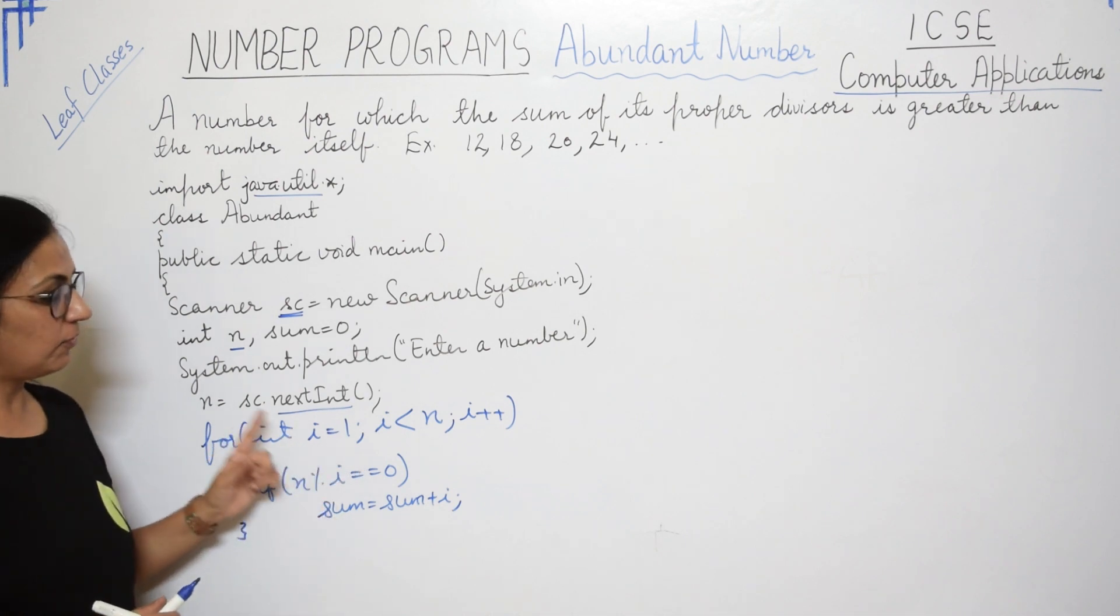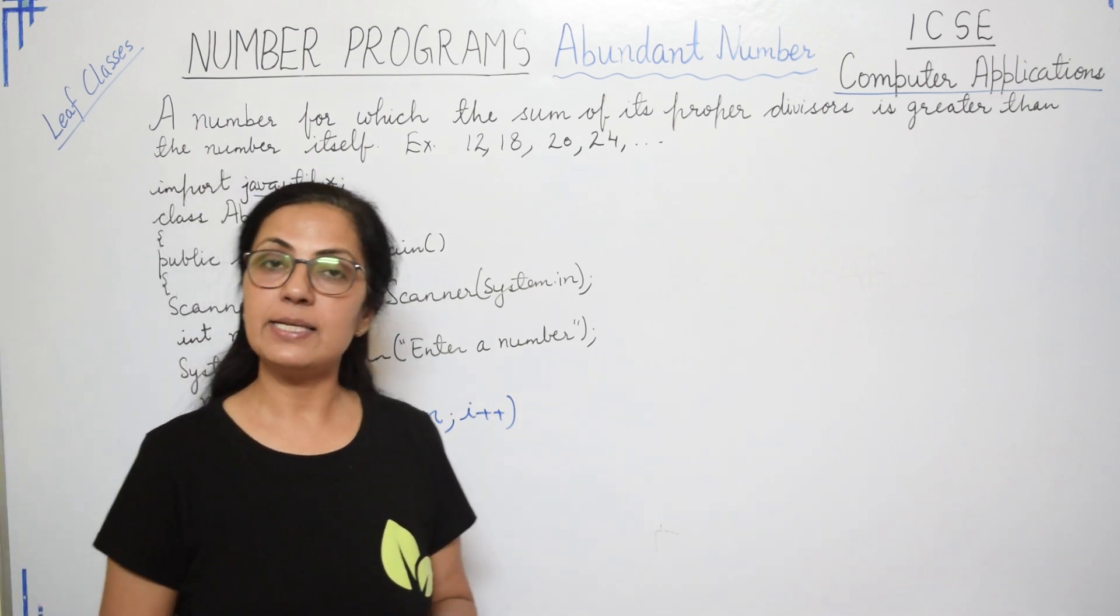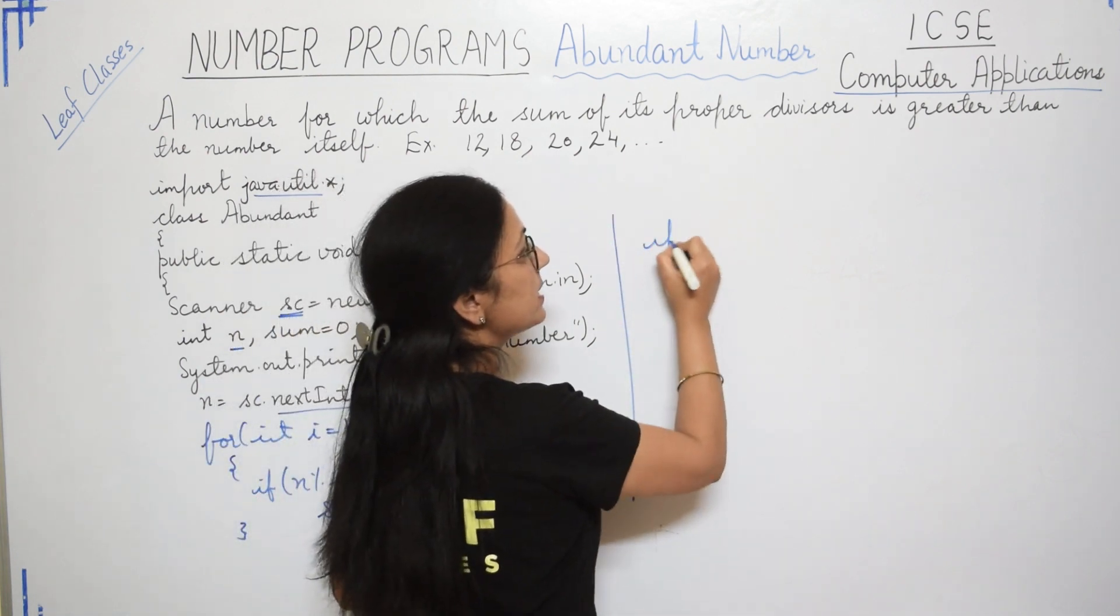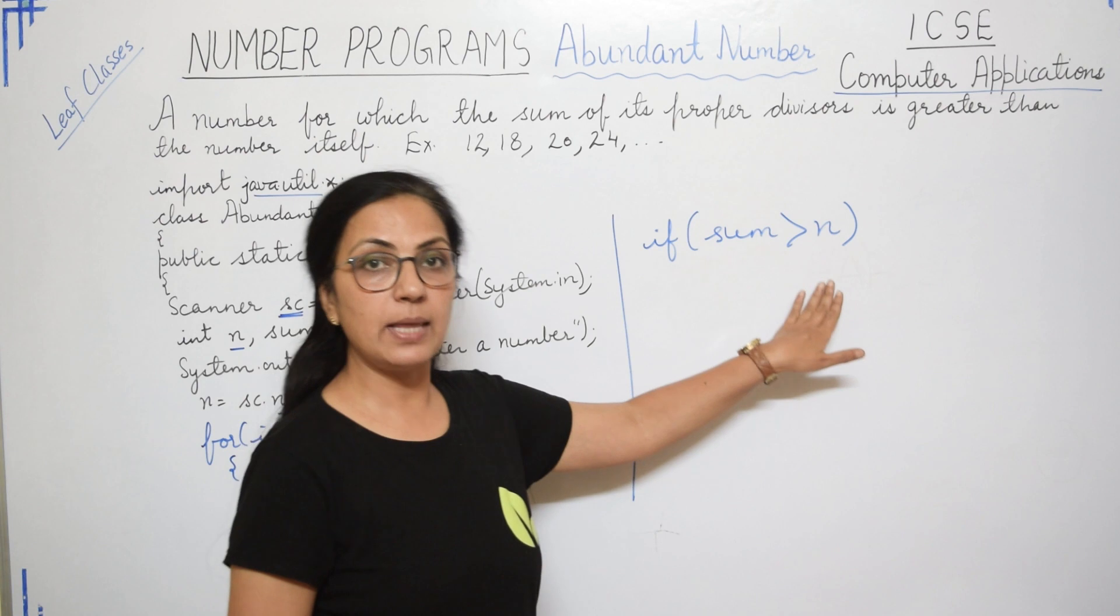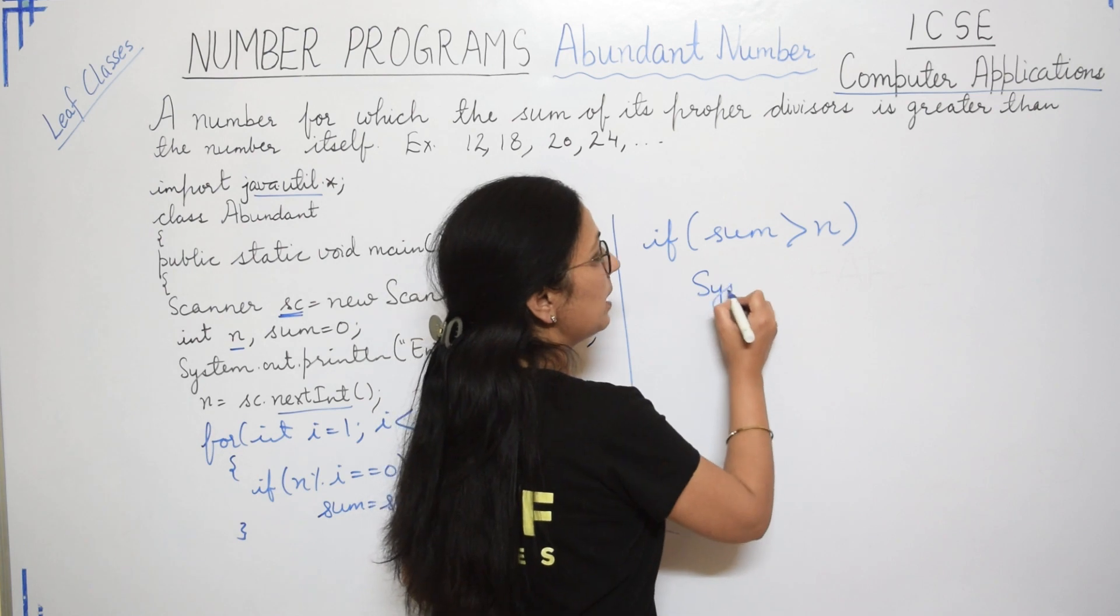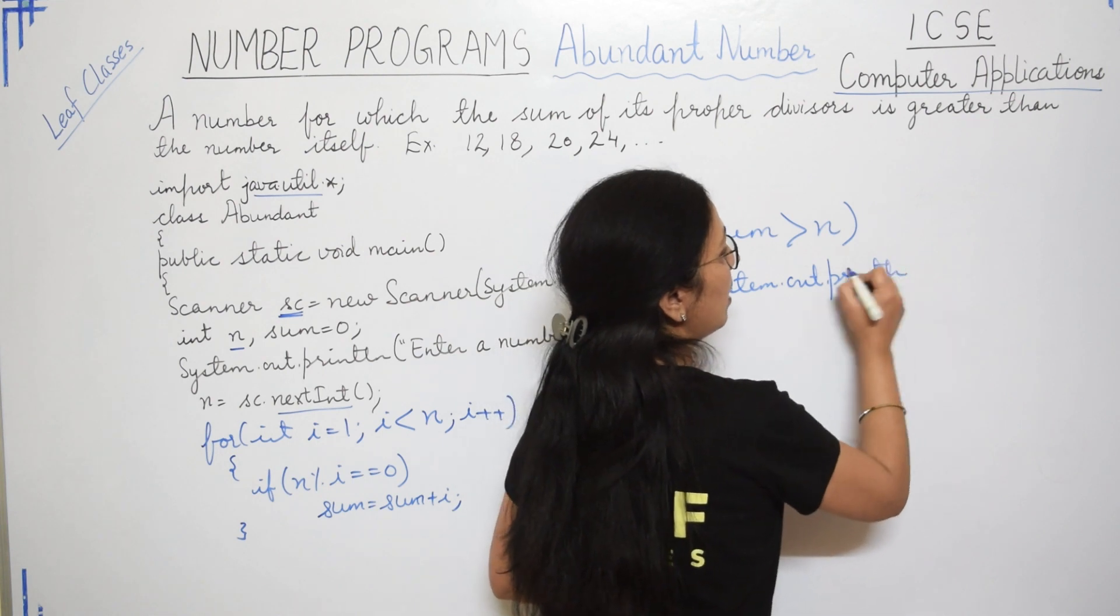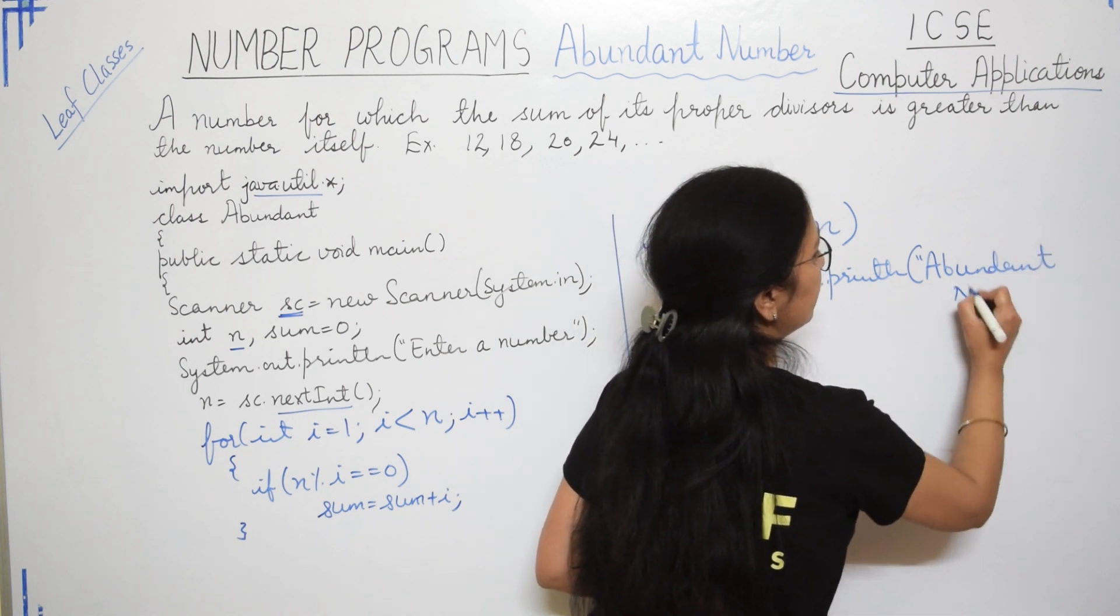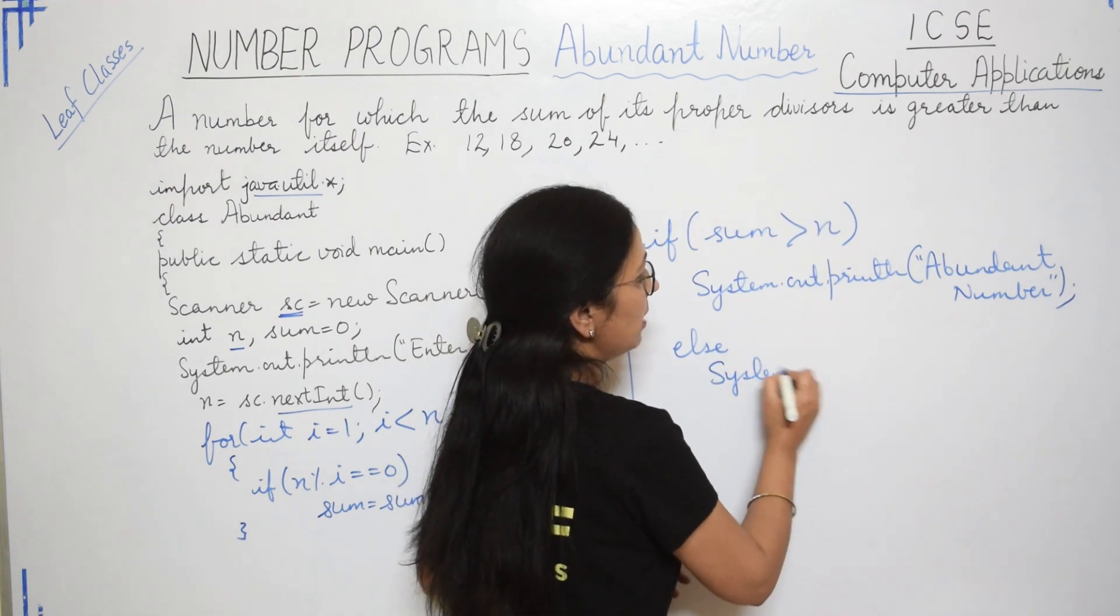After completion of this entire loop, in sum we will have the addition of all the proper divisors of number n. Now what we have to do, we have to check whether this sum is more than n or not. If the value of sum is more than n, that means that is an abundant number. So using print statement, you will be displaying that system.out.println Abundant Number. Otherwise we will print, it is not an abundant number.